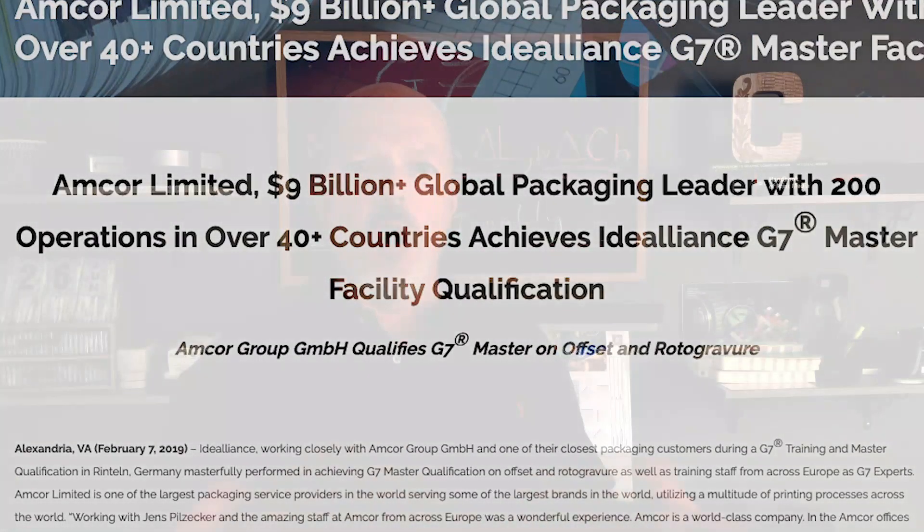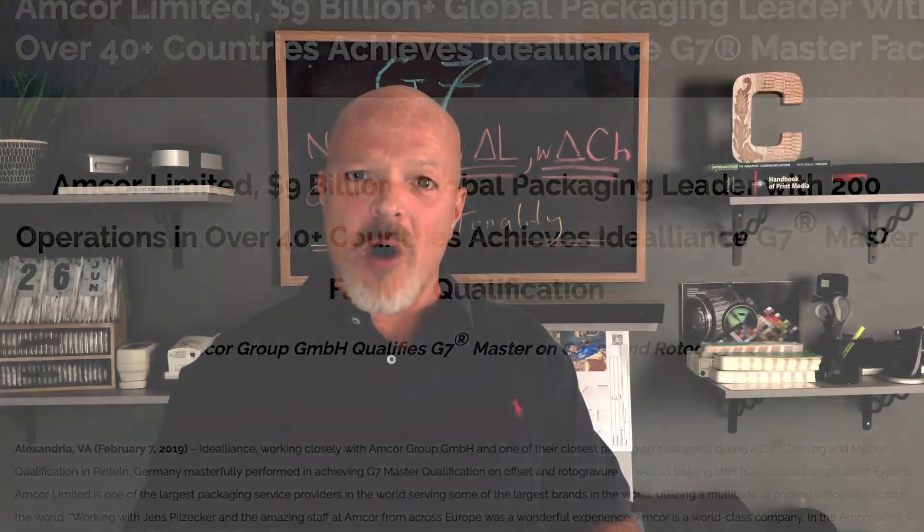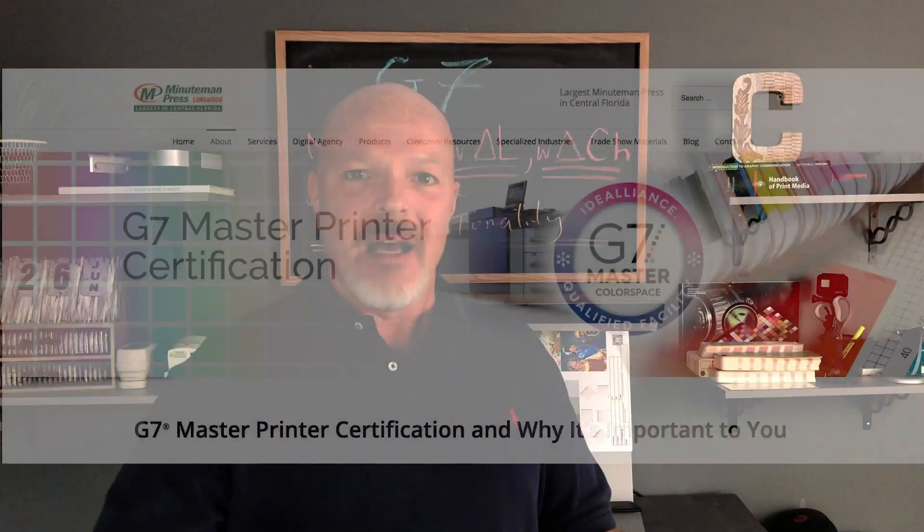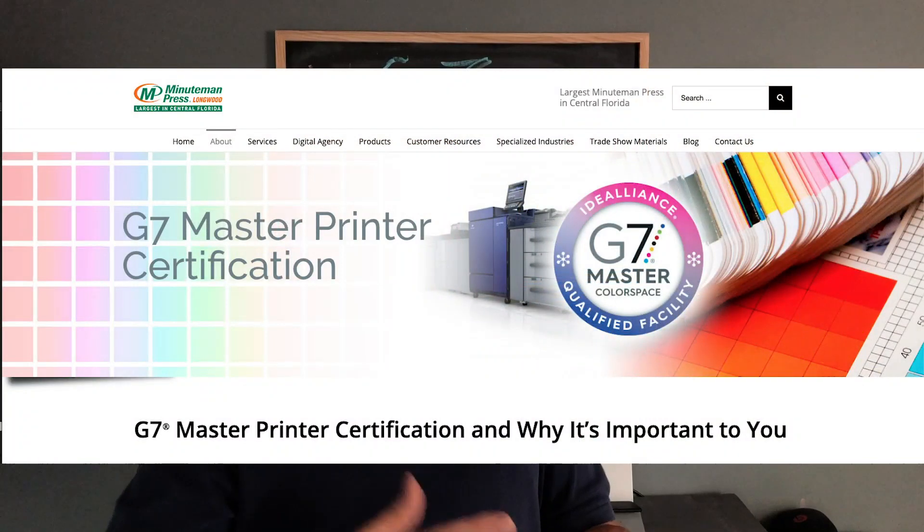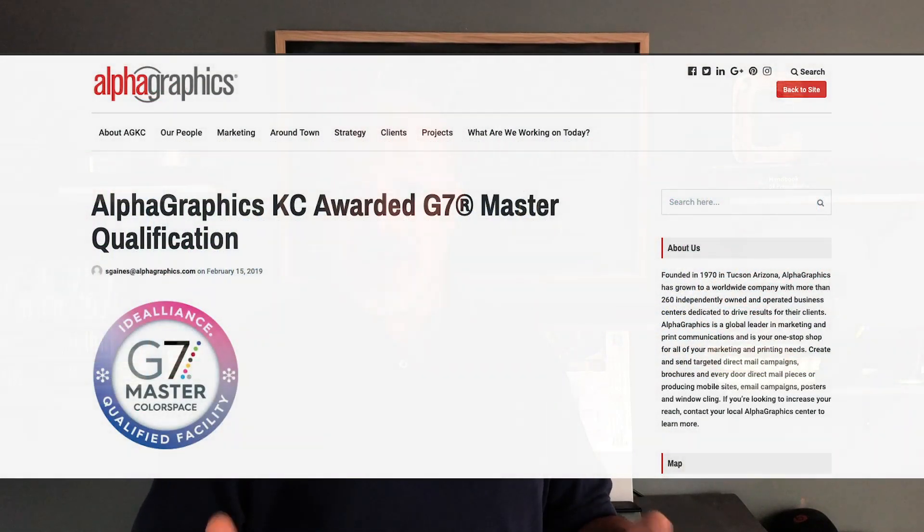Large-scale enterprises and print producers like RR Donnelly, or in packaging we have NPS, Westrock, and Amcor. These are global printers that are very large scale. We even have smaller scale companies like franchises: Speedy's, Minuteman Press, or AlphaGraphics, for instance, or maybe even an independent commercial printer.